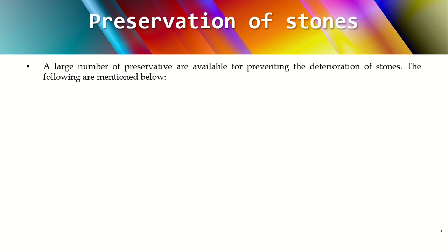Remember, we cannot use a single preservative for all types of stones. The choice of preservative depends upon the type of decaying, the chemical composition of the stone, where the stone structure is located, and various other observations. You can't decide that one preservative can be applied for all sorts of masonry — that's wrong.